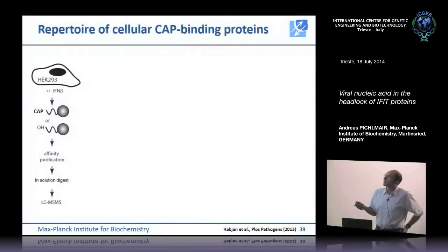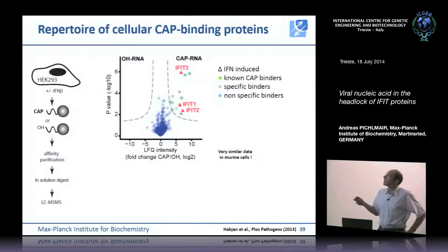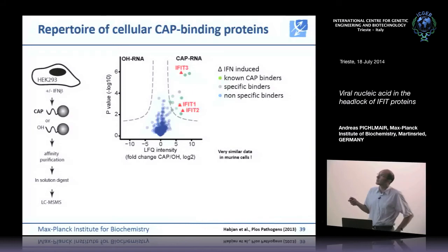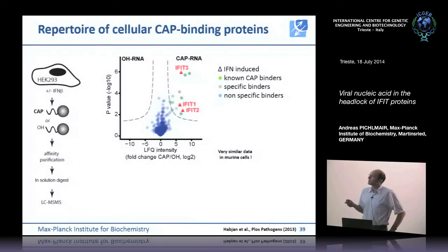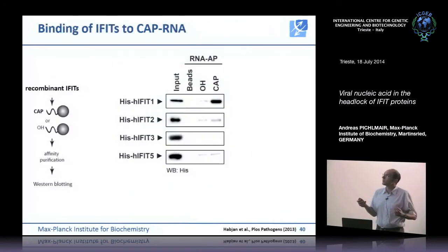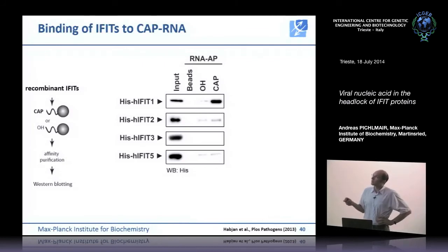We fused unmethylated capped RNA to beads and asked which proteins would bind to this type of RNA. We found that the IFIT1/2/3 complex could be identified in these mass spec experiments. Strikingly, we could find IFIT1, 2, and 3, but not IFIT5 — which was surprising since IFIT5 had seemed very similar to IFIT1. Confirming direct binding using recombinant IFIT proteins, again only IFIT1 bound to unmethylated capped RNA, whereas the other IFIT proteins did not bind to this capped RNA.